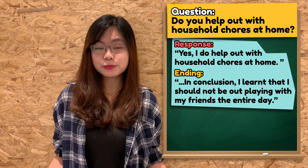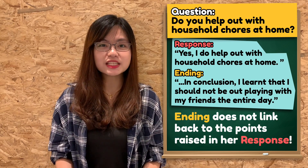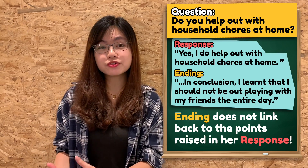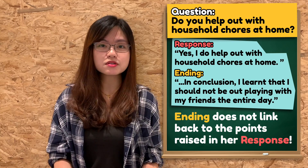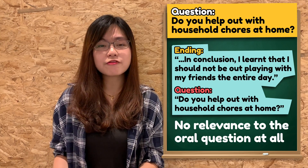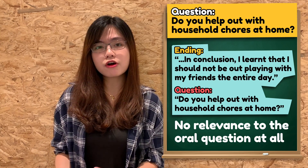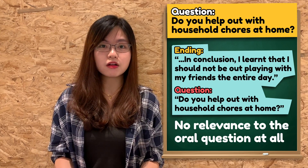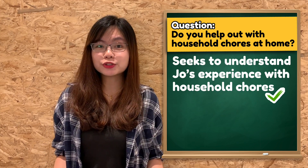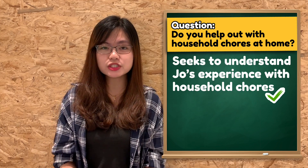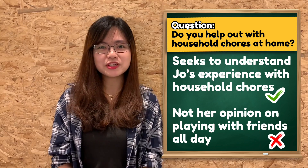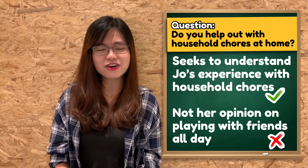As you can see from the example, student Jo's ending does not link back to the points raised in her response. Furthermore, it does not have any relevance to the oral question at all. The question seeks to find out about student Jo's experience with household chores and not her opinion of playing with friends all day.